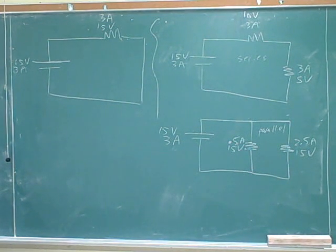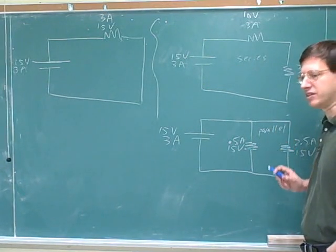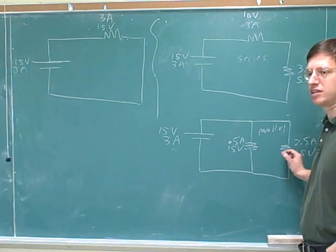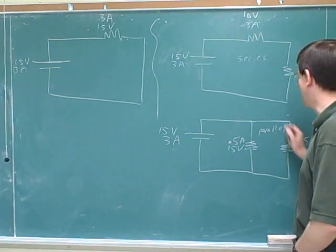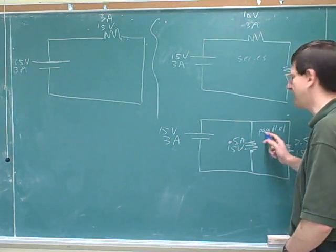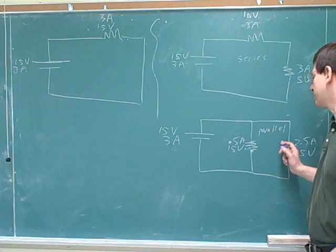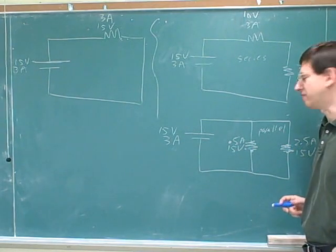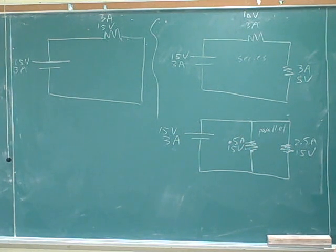We also need a technical definition for things that are in parallel, because sometimes things seem to be in parallel but they're not. Things are in parallel if the tops of the devices are directly connected with no intermediate devices, and the bottoms of the devices are directly connected with no intermediate devices. So the tops of these two things are directly connected — we can go from here to here without passing through any other devices — and the bottoms are also directly connected by a wire. That's what tells us these are in parallel. You have to check both the tops and the bottoms. Put that in your notes as well: parallel is when the tops are connected with no intermediate devices and the bottoms are connected with no intermediate devices.